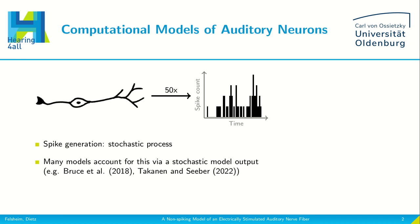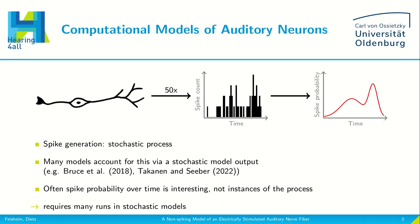Many models account for this stochastic process via a stochastic model output, but often the spike probability over time is what's interesting, not individual instances of the stochastic process. In order to estimate the spike probability from stochastic models, many runs are required.